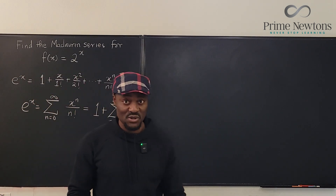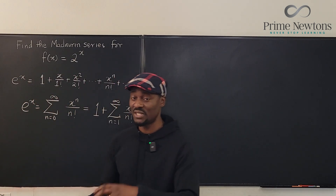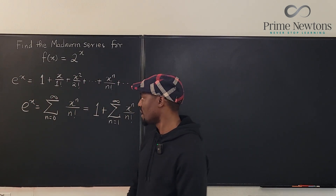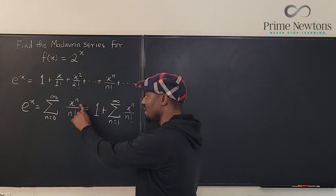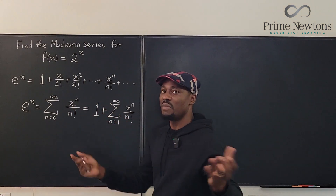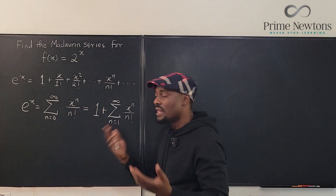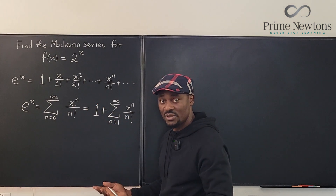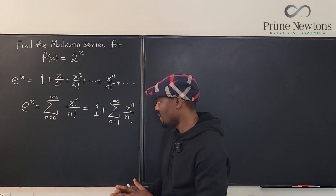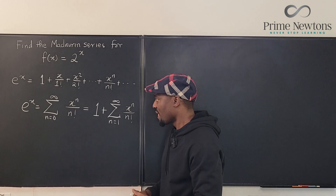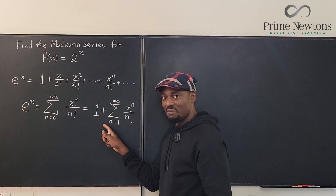Now, if it was not the Maclaurin series, if it was centered somewhere else, then we're going to write this as x minus a to the n and that'll be the Taylor series of it. So this distinction is important.